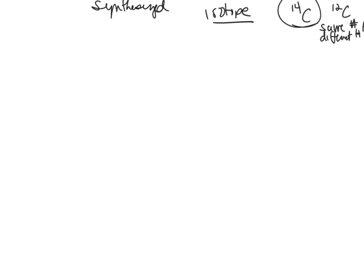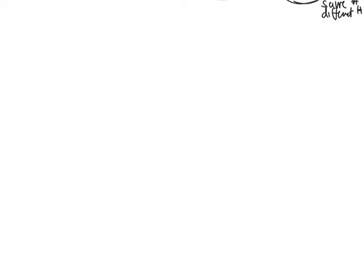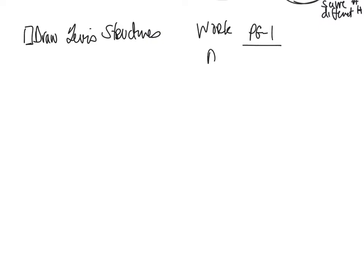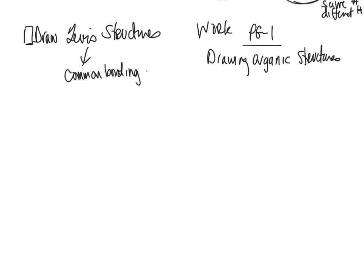So what are our learning objectives for today? We are going to learn how to draw Lewis structures — that's going to be very important. We're going to work in our POGIL book and work the POGIL 1 activity together, which is drawing organic structures. We'll learn the common bonding patterns, and we'll also talk a little bit about electronegativity difference and formal charges. That's what we'll focus on today.